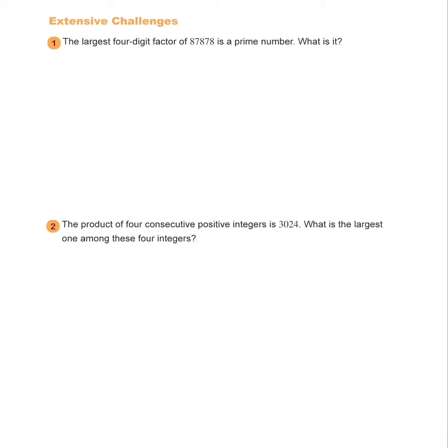Go on to the extensive challenges, which are essentially the next part. The largest four-digit factor of 87878 is a prime number, and we want to know what it is.